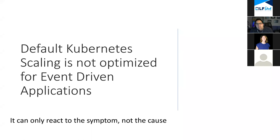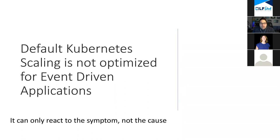Now, what about KEDA? One of the ways it came about is from our learnings in Azure running serverless services. More and more, people wanted to run event-driven workloads not necessarily using a serverless service — maybe on-premises, with more control, or unifying their strategy around Kubernetes. What we saw was that the default Kubernetes scaling was not optimized for event-driven applications. In Kubernetes, the default behavior watches resource metrics: how much CPU and memory is the app consuming.